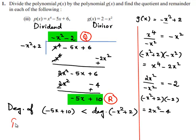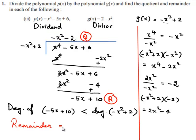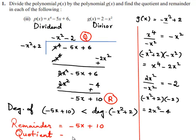Therefore, the remainder is equal to minus 5x plus 10, and the quotient is equal to minus x square minus 2.